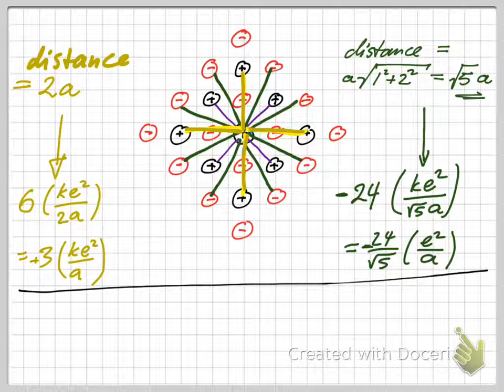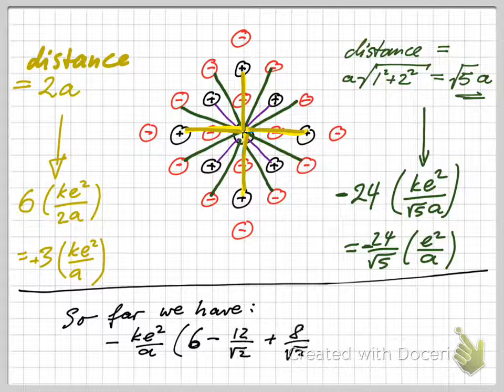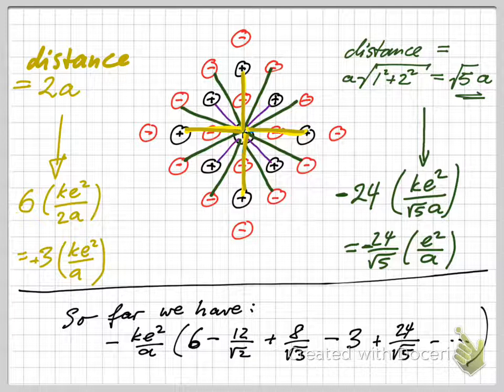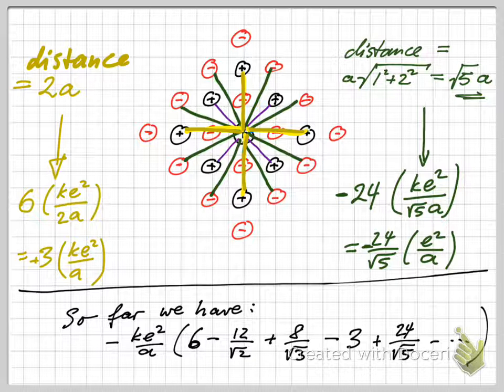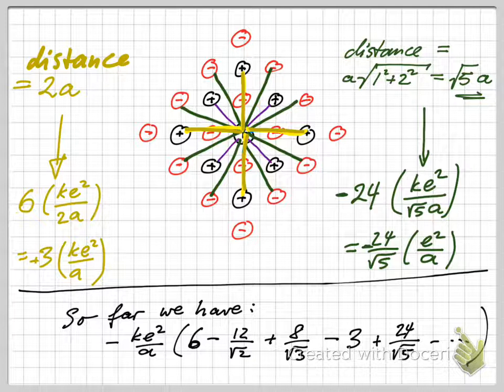This keeps on ad infinitum. So far we have the following results: I can factor out a minus ke squared over a, and I'm left then with this particular sum. Those are the terms that we've actually looked at, but the sum would continue. It's an infinite sum of course.